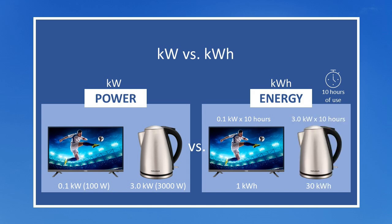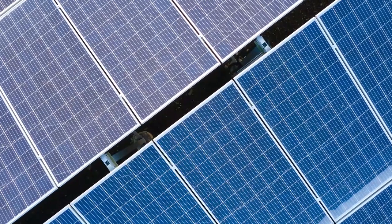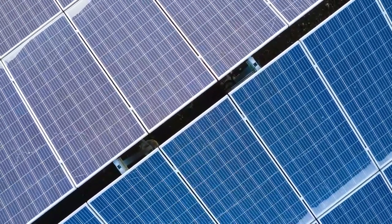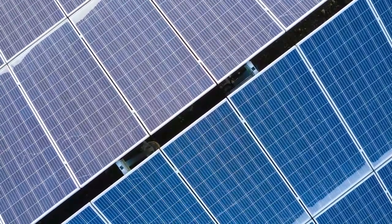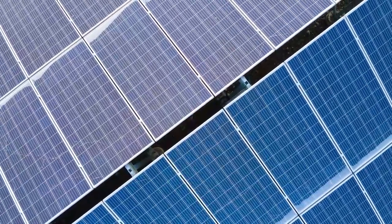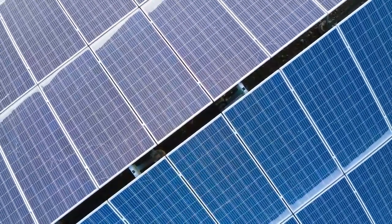If however you boiled your kettle for 10 hours — although we don't recommend you do that — you would consume 30 kilowatt hours of energy. That's 10 hours at 3.0 kilowatts, and you'd end up with a big bill and a steamy kitchen. In the context of solar panels, we use kilowatt hours to specify how much power and energy they generate rather than how much they consume.